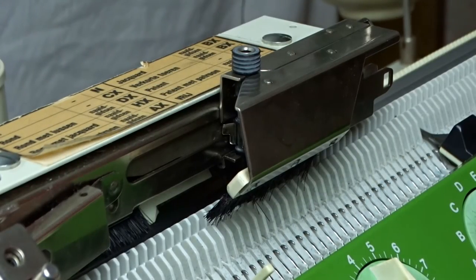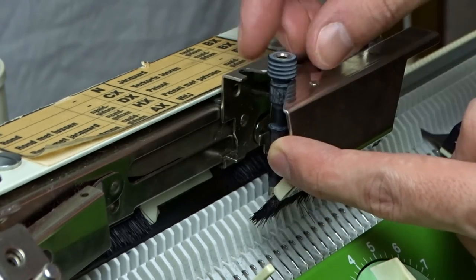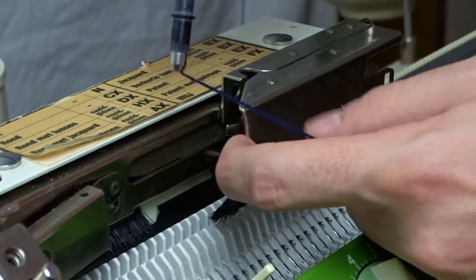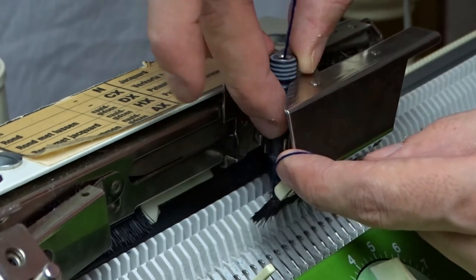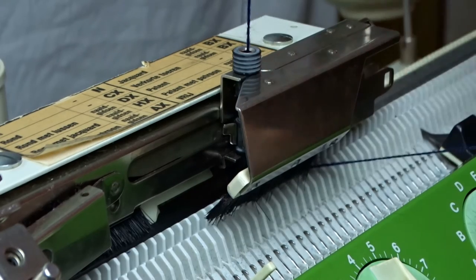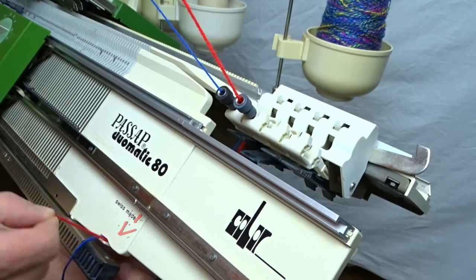You can see it close up. Then, pull the yarn under the brush between the beds and insert it in the notch on the right side of the machine.